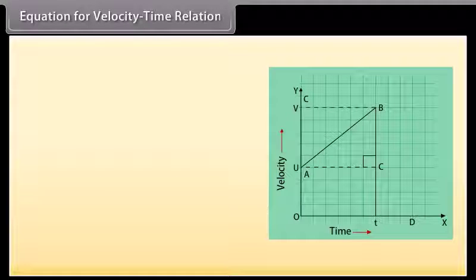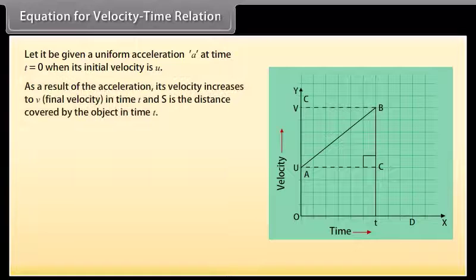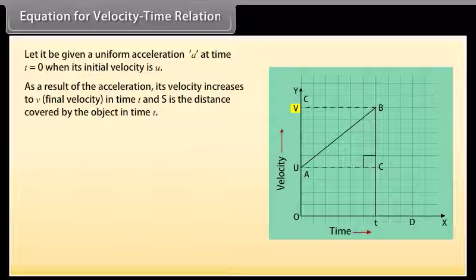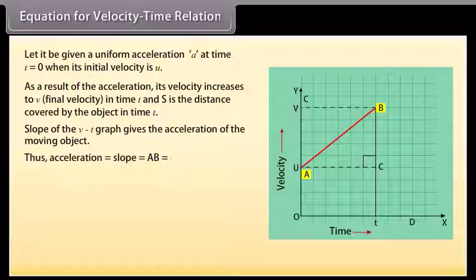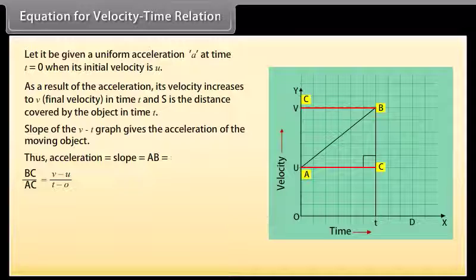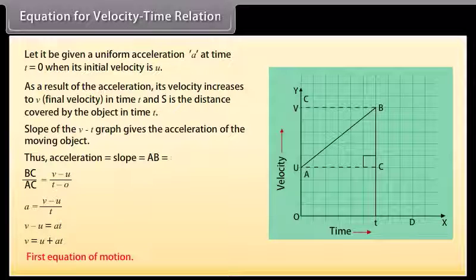Equation for velocity-time relation: consider an object moving with a uniform velocity U in a straight line, given a uniform acceleration A at time T = 0. As a result of the acceleration, its velocity increases to V (final velocity) in time T, and S is the distance covered. The slope of the V-T graph gives the acceleration: A = (V − U) / T. Therefore V − U = AT, giving us V = U + AT — the first equation of motion.